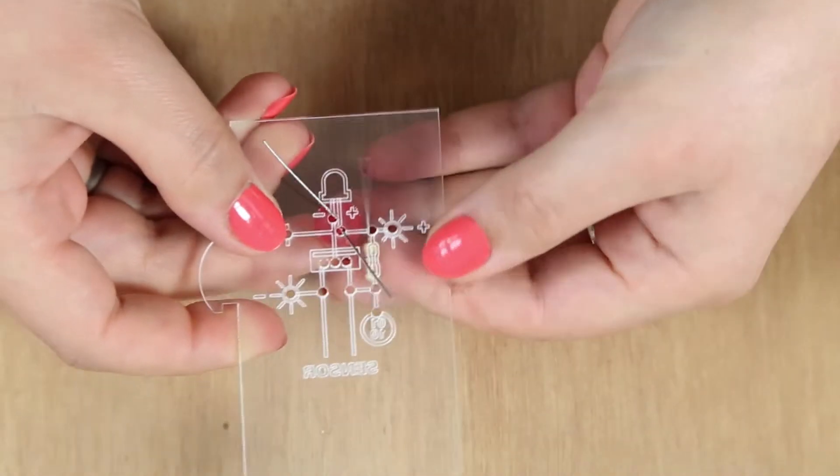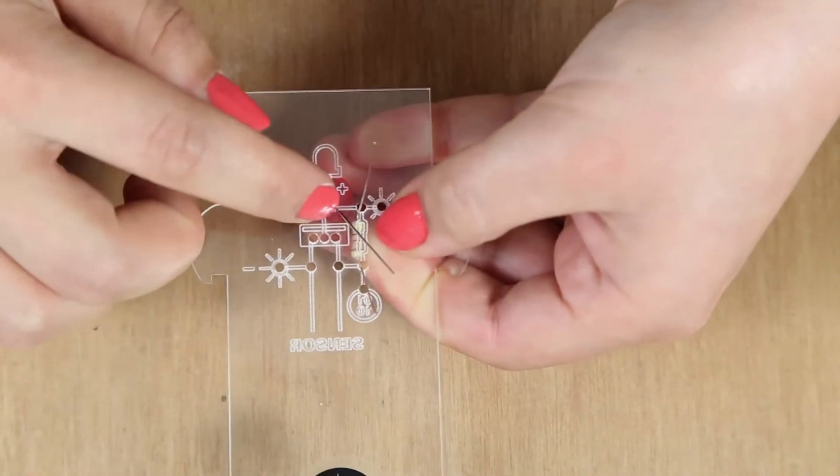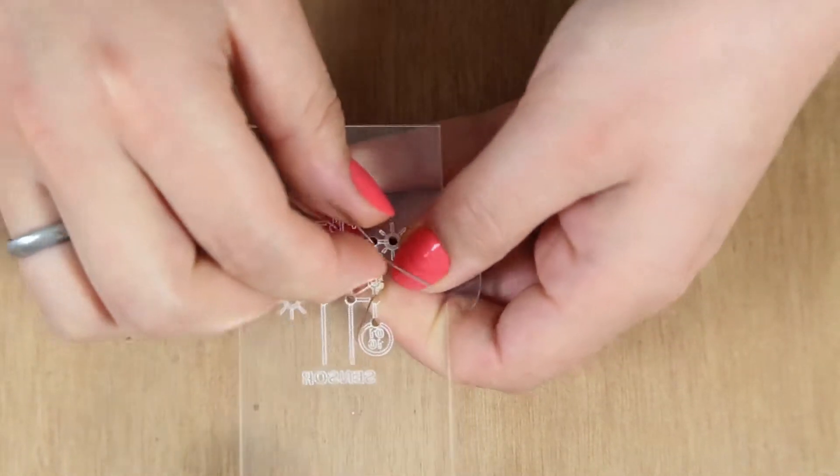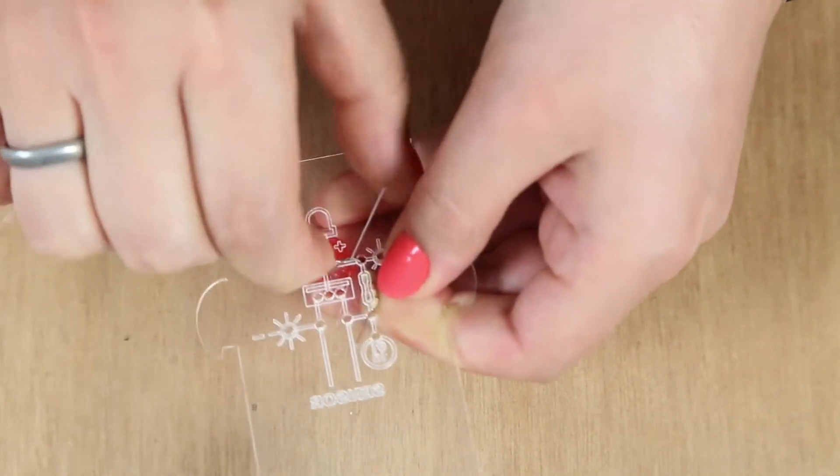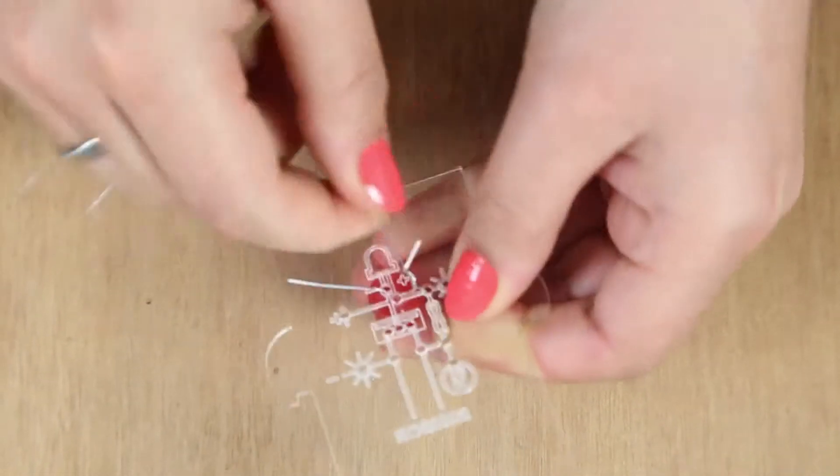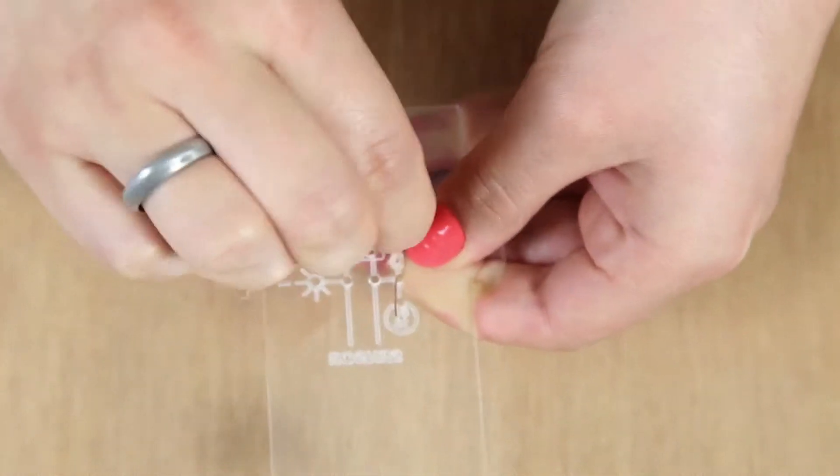So the way the Thirsty plant works is that you twist components together. So we're going to take the positive leg of the LED and one of the legs of the resistor and just twist them together like this. And that's how you make a connection.